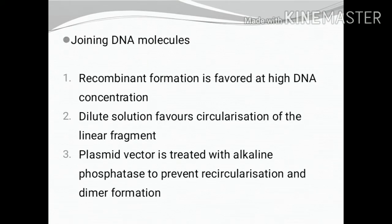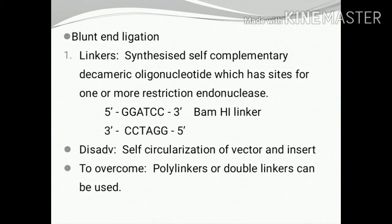Recombinant formation is favored at high DNA concentration. In dilute solution, circularization of the linear fragment occurs. Plasmid vectors can be treated with alkaline phosphatase in order to prevent recircularization and dimer formation.